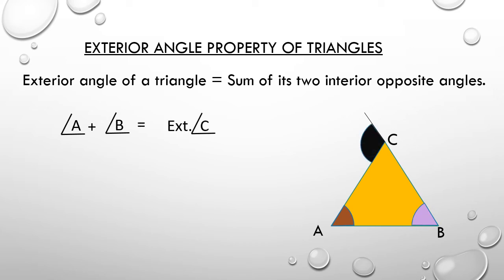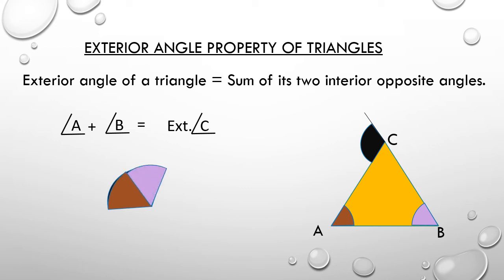Let us check it out. Cut the exterior angle part at C and paste it on paper. Then cut angle A and paste it, then cut angle B and paste it. We can notice that angle A plus angle B is equal to the exterior angle C. Hence, the exterior angle of a triangle is equal to the sum of its two interior opposite angles.